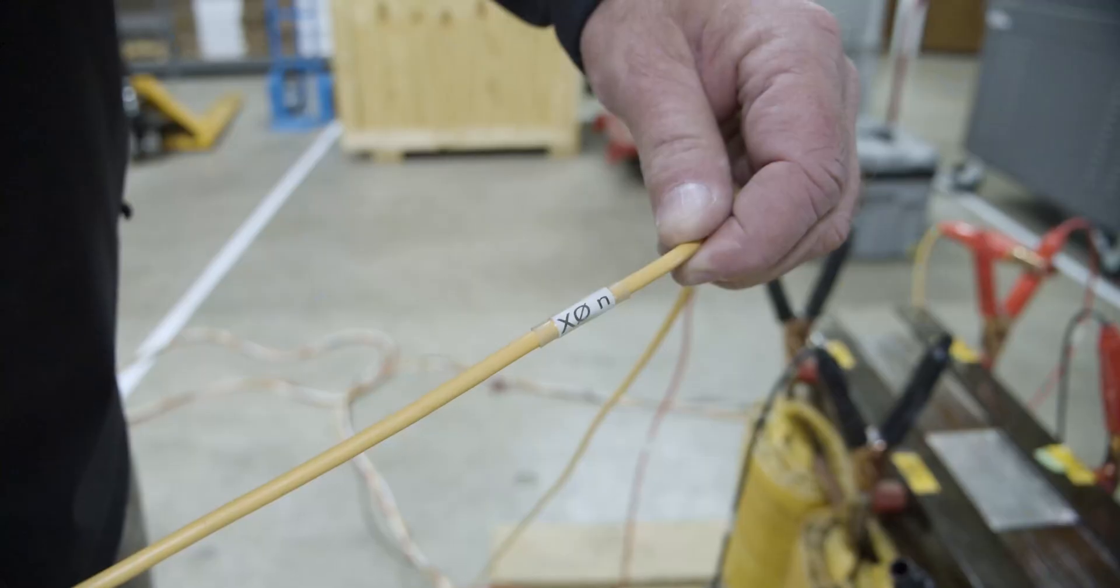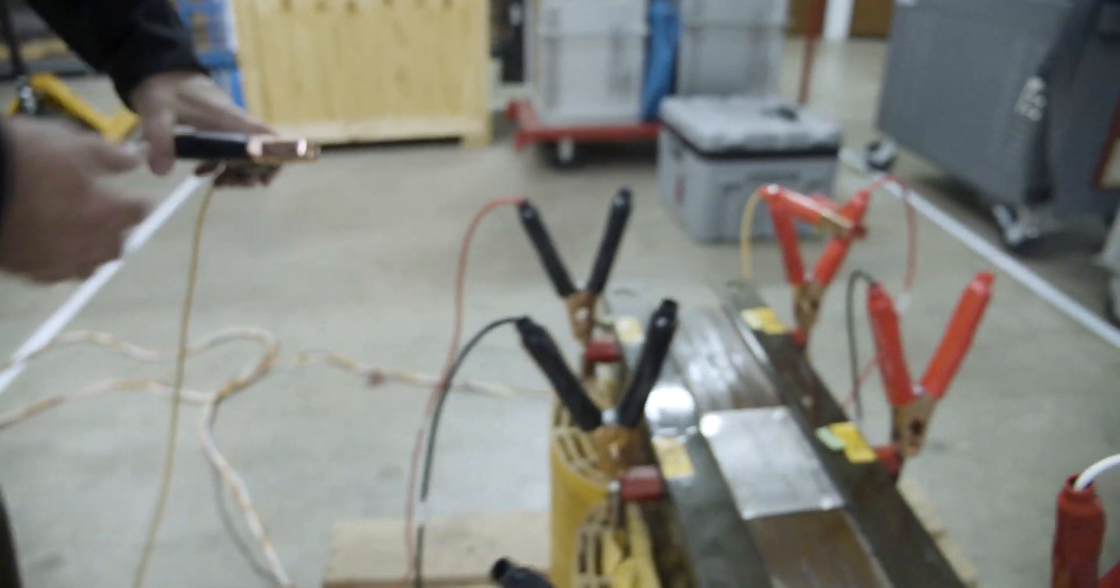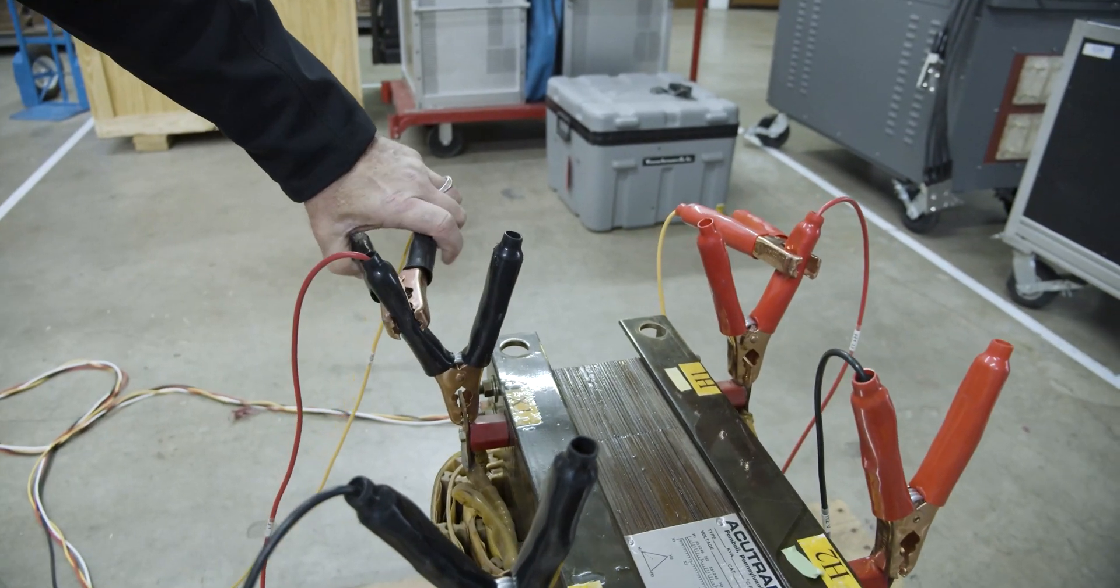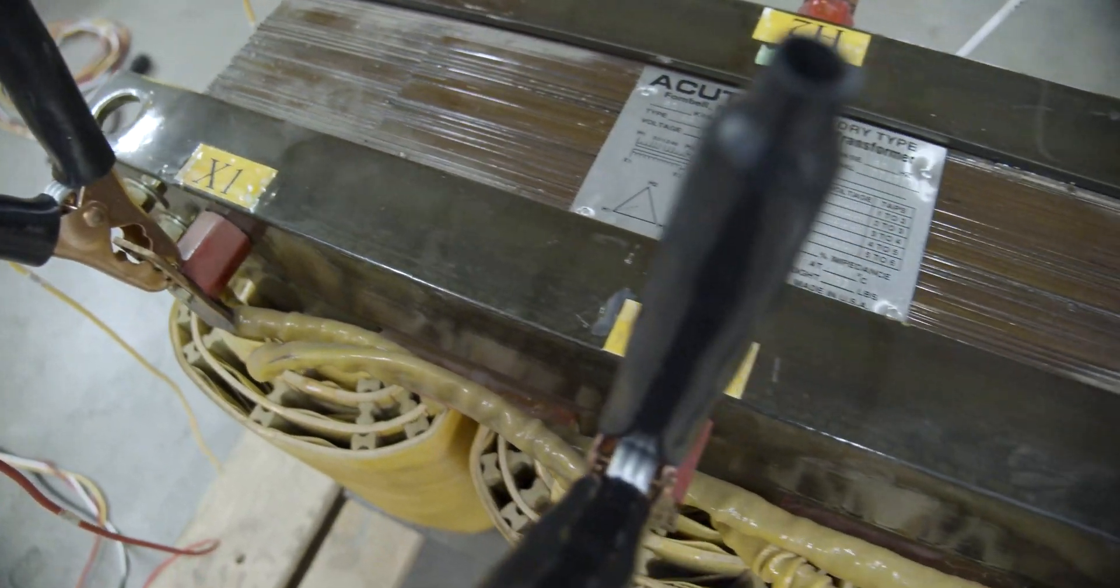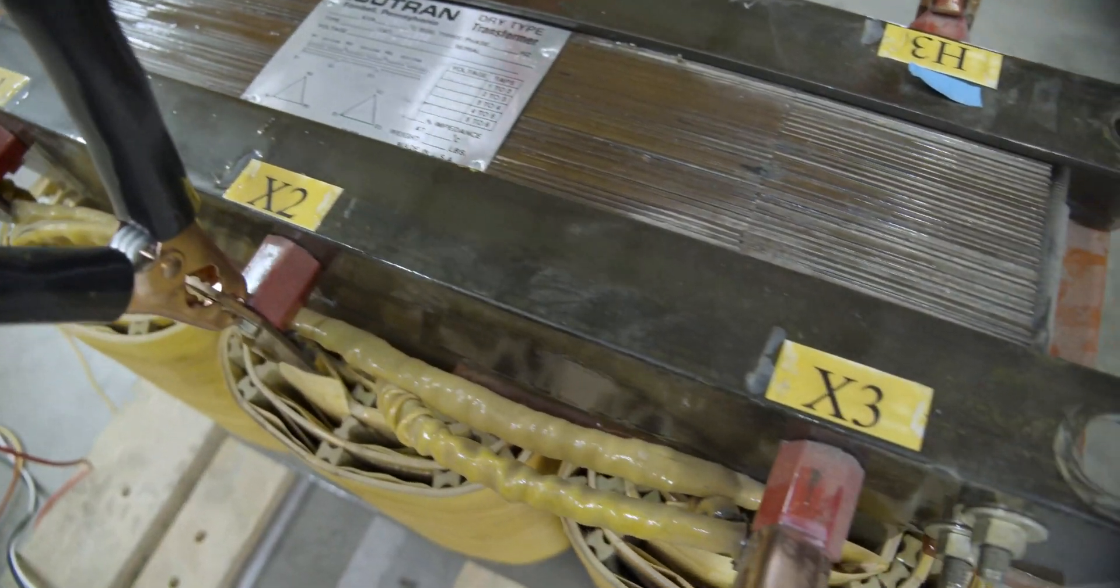Again we have a neutral lead. It's not being used because it's a delta so we'll just clamp it onto the insulation of one of the handles of the other test leads. So there you have your test connections.